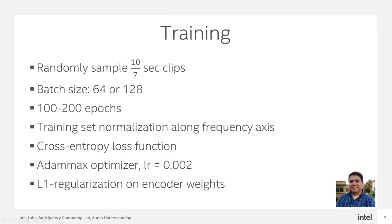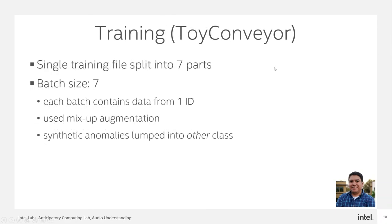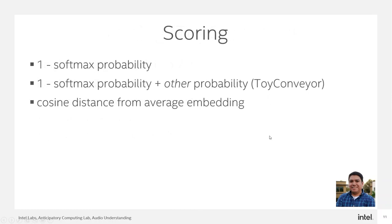For the toy conveyor we use a slightly different training strategy: a much smaller batch size of 7, and we split a training file into 7 parts, where each batch contains information from only one machine ID. With probability one-half we corrupt one of these parts using mix-up augmentation, and our system has an additional class called the 'other class' where we lump all these synthetic anomalies. For scoring, for most machines we use 1 minus the softmax probability. In the case of toy conveyor, we also add in the other class probability, which directly measures the probability of an anomaly. We also use cosine distance, which at test time computes the cosine distance between the test embedding and the average embedding recorded during training.